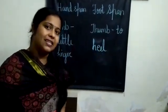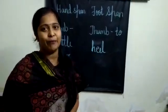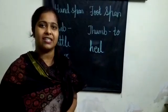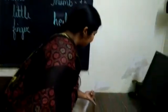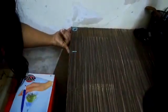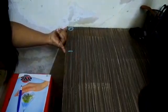Now, let's see how we can measure objects around us using the hand span. Here I have a table that I am going to measure. Start with point 0 where your thumb is placed. Then, at the little finger, mark 1. This is one hand span.